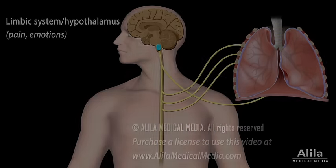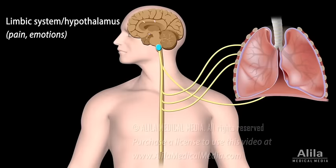The limbic system and hypothalamus also send information to the respiratory center and allow pain and emotional state to affect breathing. For example, pain or strong emotion may induce gasping, while anxiety may cause uncontrollable hyperventilation.